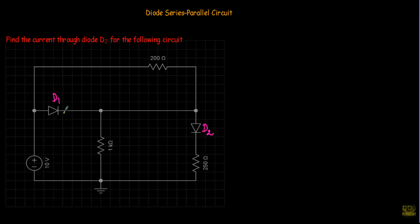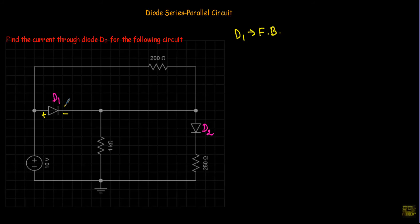First we have to check the bias conditions of the diodes. The positive terminal of the 10V source is connected with the P side of diode D1 and the negative terminal is connected with the N side of D1. This means diode D1 will be in forward bias.